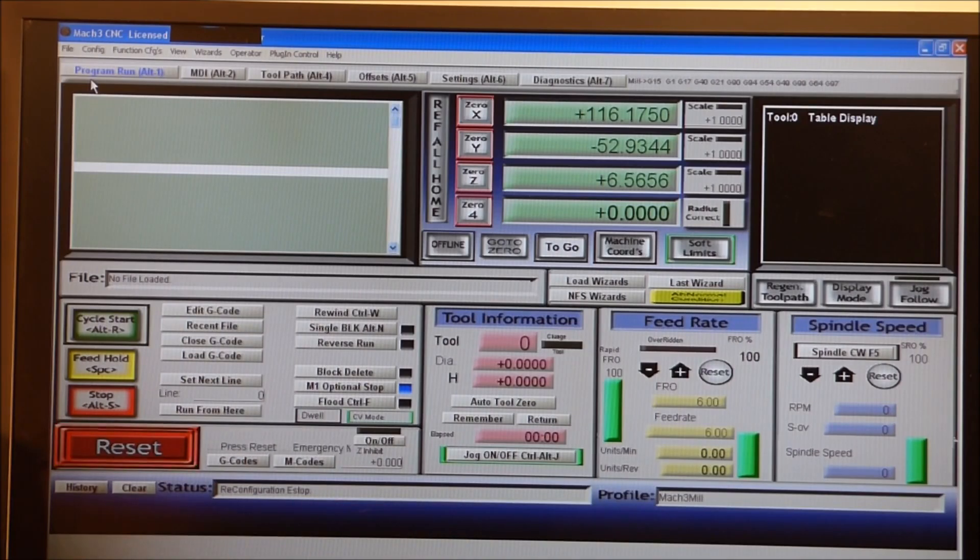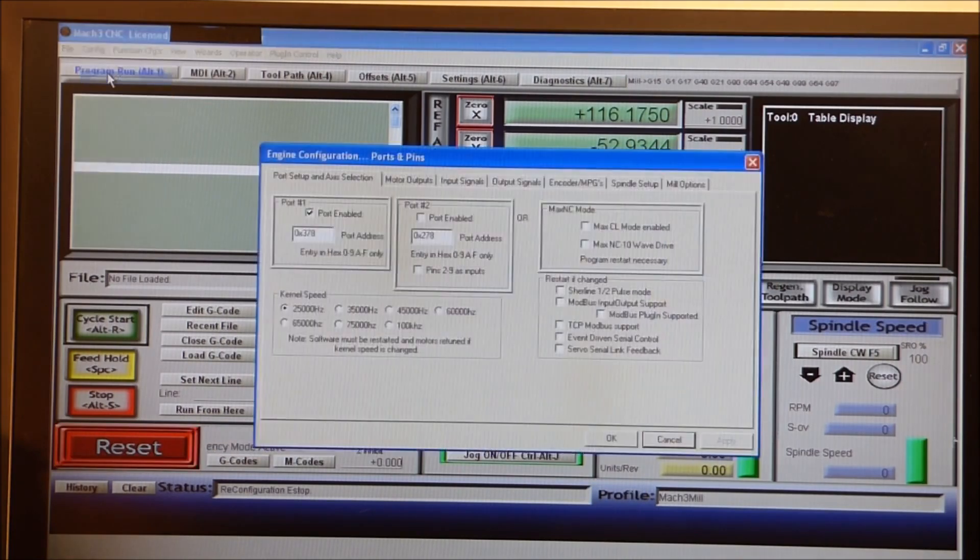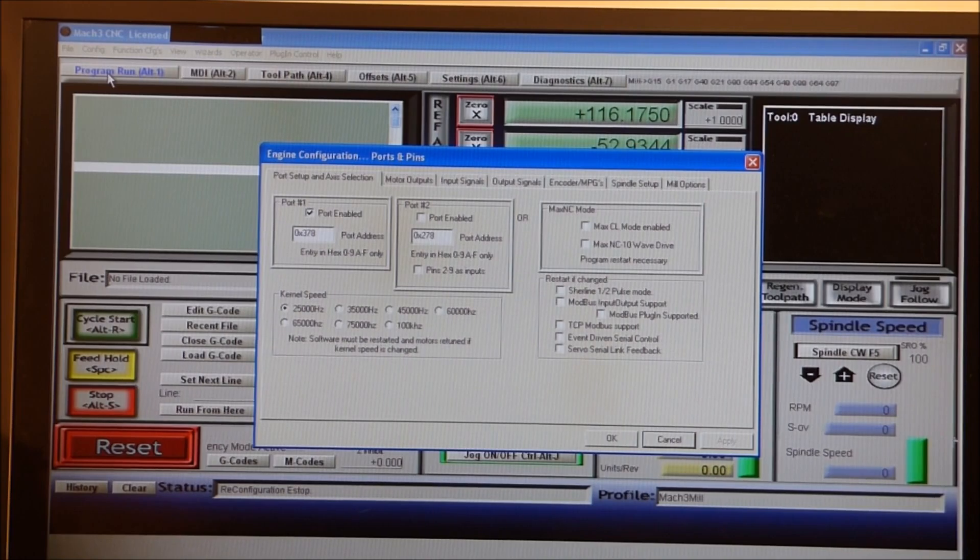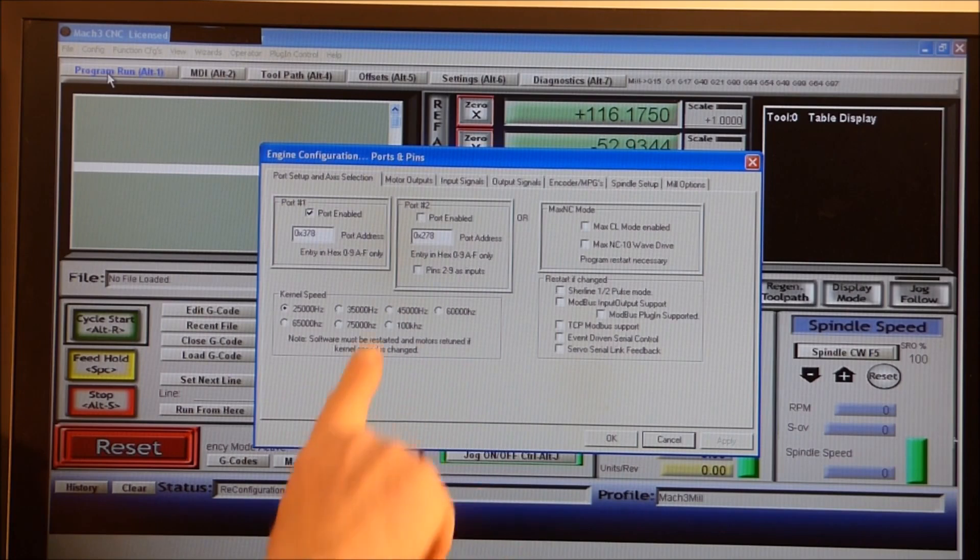Mach 3 will look something like this - this is the opening screen when you open it. You go into config and then go to ports and pins.